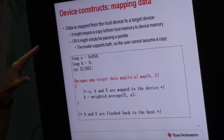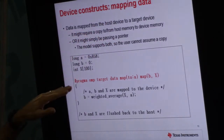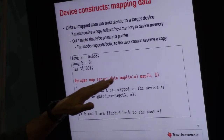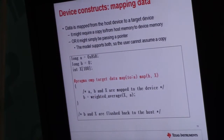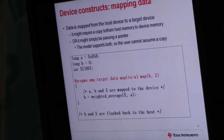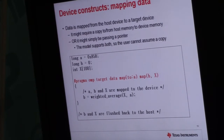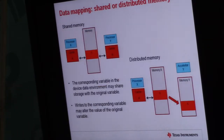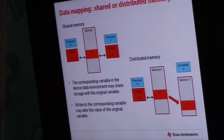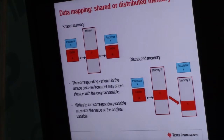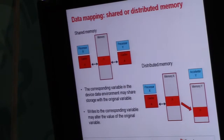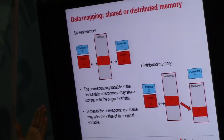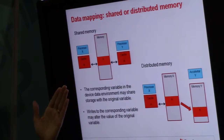On the device constructs, you have this concept of mapping data to a device. You say OMP target data, map variable A to a device, map variable B, map variable X — this is saying map this data from the host device to the target device, so map it from the ARM space to the DSP space. A design goal was to support both shared memory systems (where the DSP and ARM access the same memory) and distributed memory systems (where you'd need copies). The model is defined so that both types of systems are supported by the OpenMP 4.0 specification.